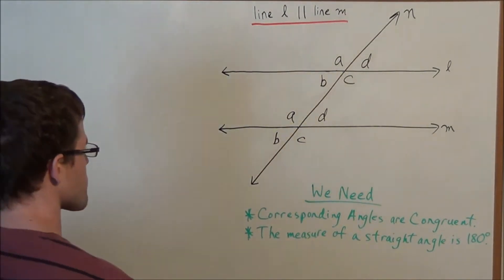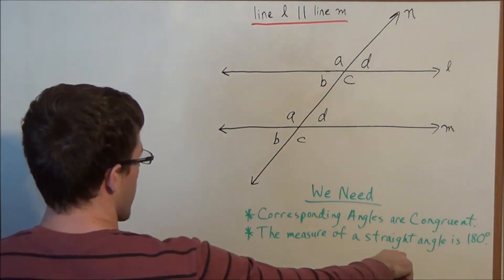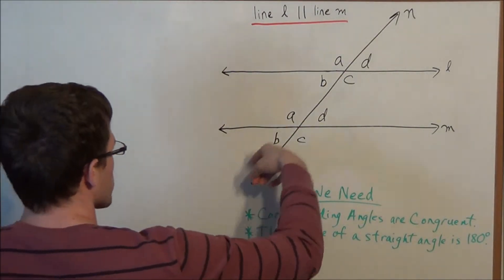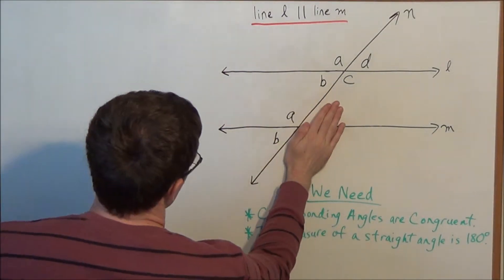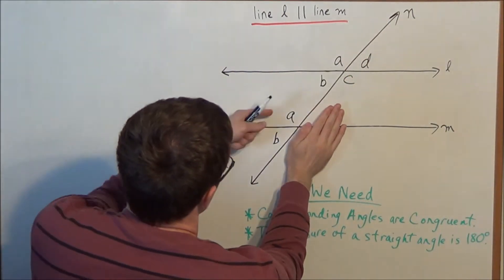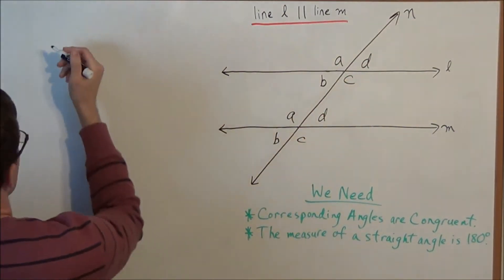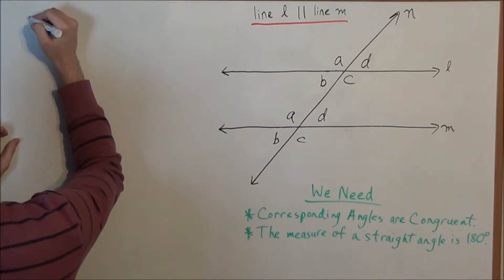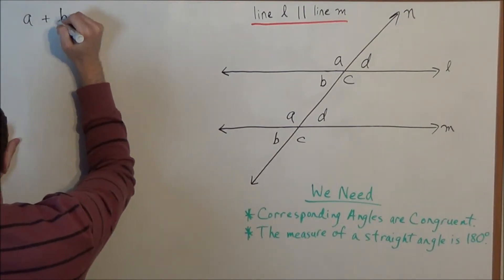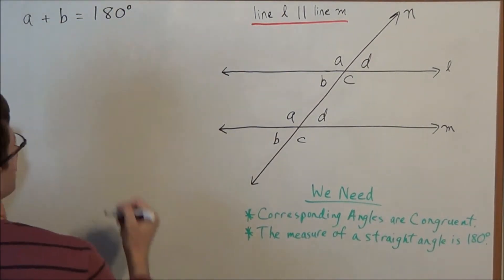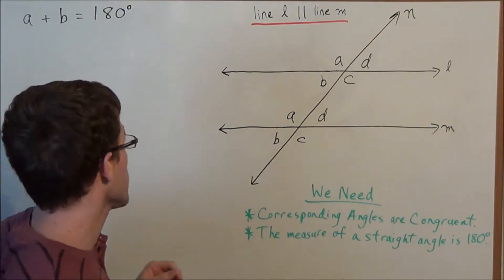Well, if we use this postulate, any time we have a straight angle, the sum of the angles is 180 degrees. So right now we have along this straight line we have angle A and angle B. So using the second postulate we have A plus B equals 180 degrees because angle A and angle B form a straight line.